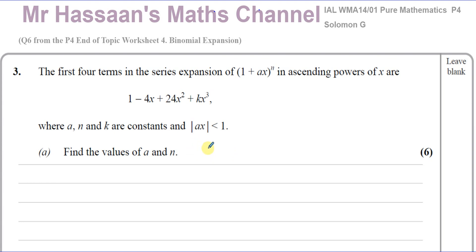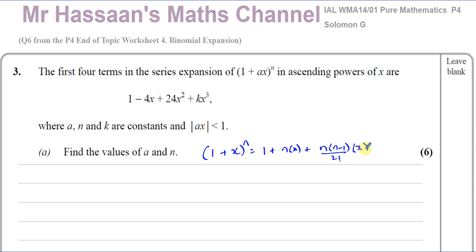So we use a formula found in the formula book, which is of the form: (1 + x)^n = 1 + nx + n(n−1)/2! · x² + n(n−1)(n−2)/3! · x³ and so on, following the same pattern.